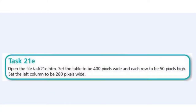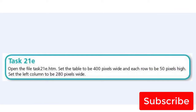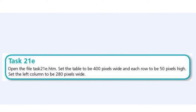Hello guys, welcome to another video. In this video we're going to be looking at task 21E. The question says: open the file task21e.htm, set the table to be 400 pixels wide, and each row to be 50 pixels high. Set the left column to be 280 pixels wide.